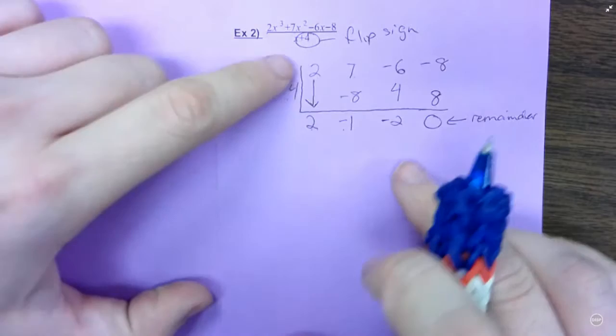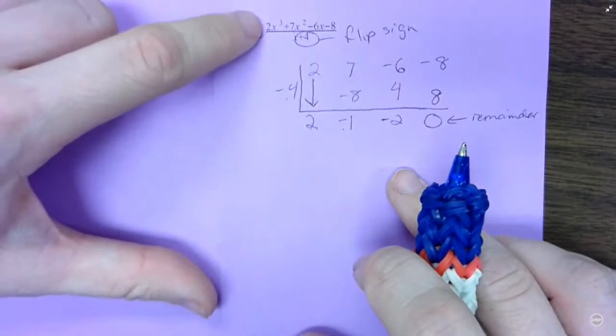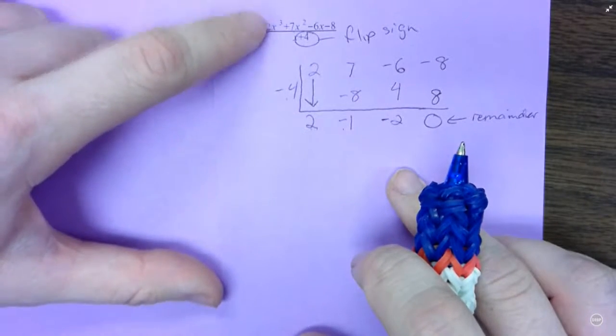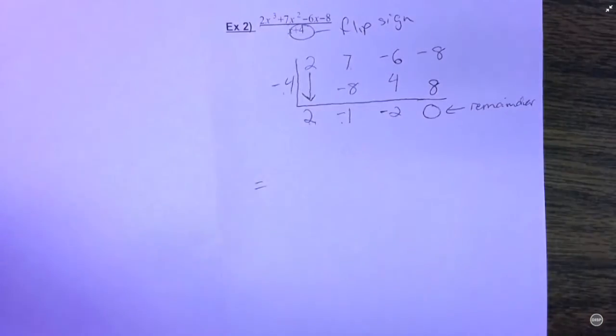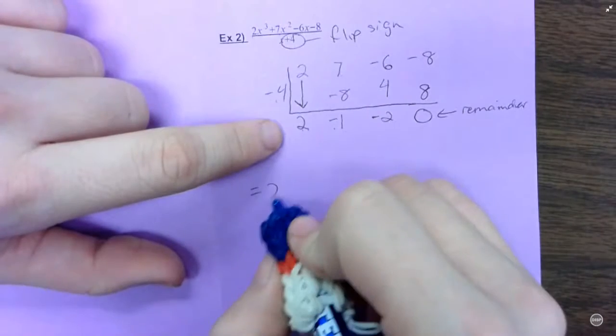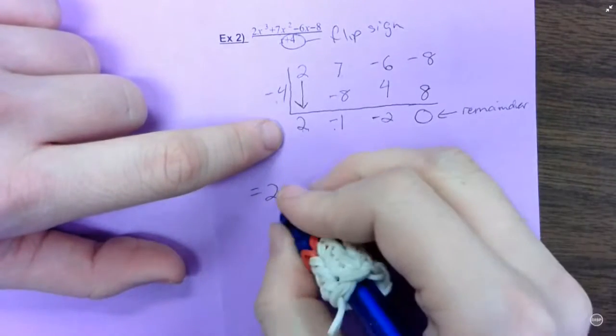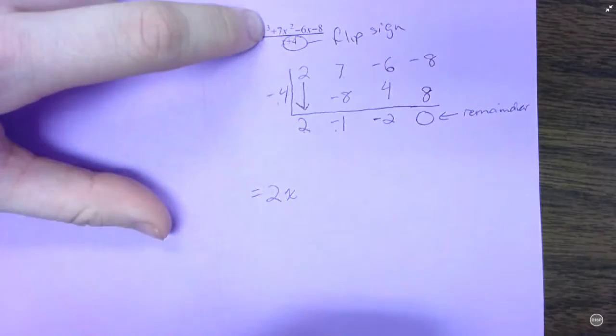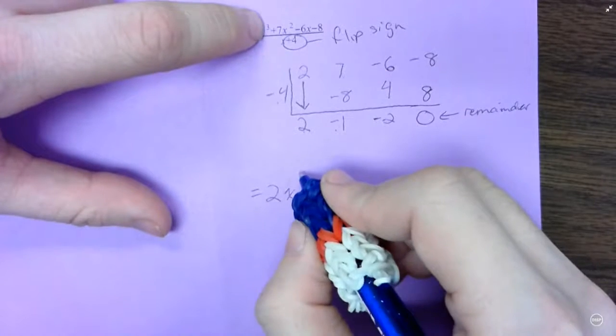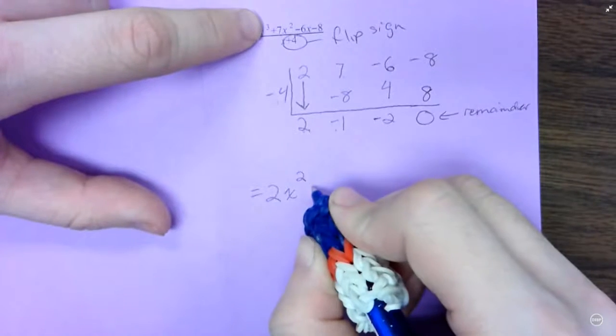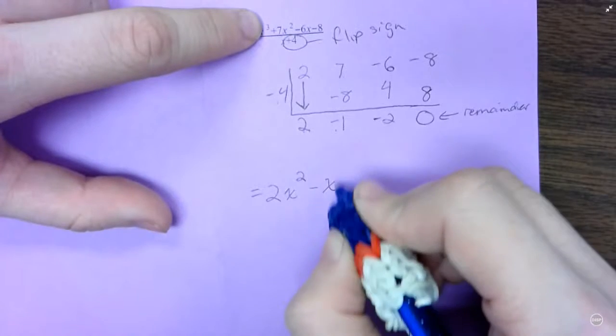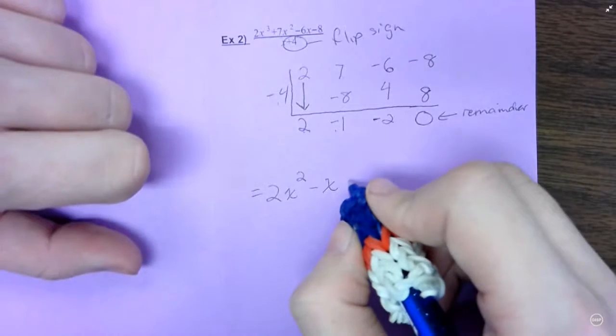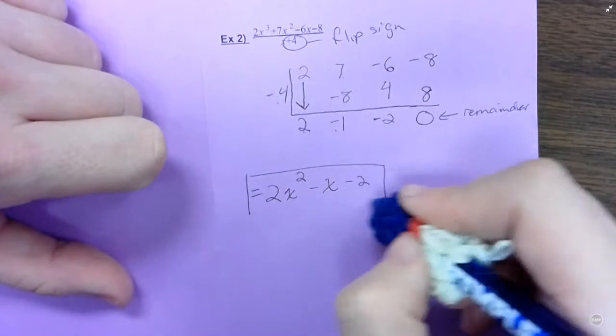Which means that negative 4 is an x-intercept of this right here. Which will come up more next week. But your answer to the division problem is 2x to the – and I started with x to the third. So this is going to be x squared minus 1x. And I don't really need to put the 1, but you can if you want. Minus 2. And there's your quotient.